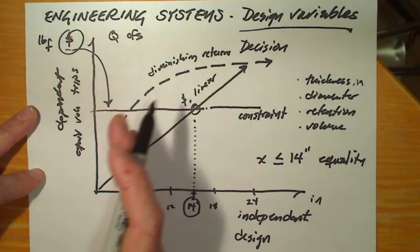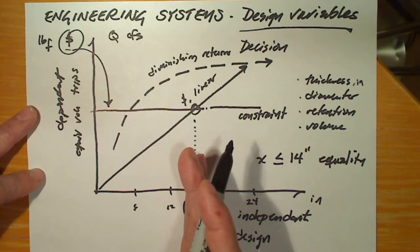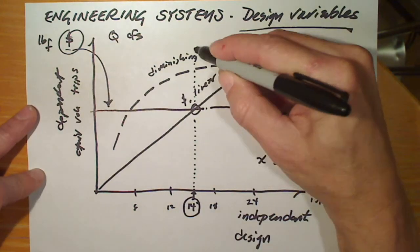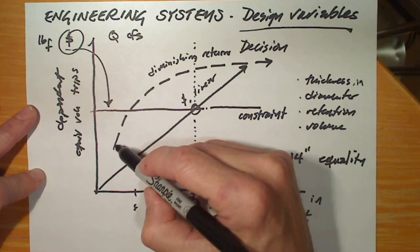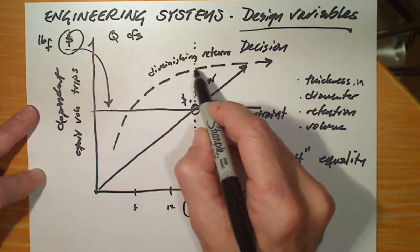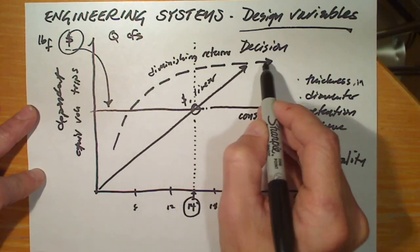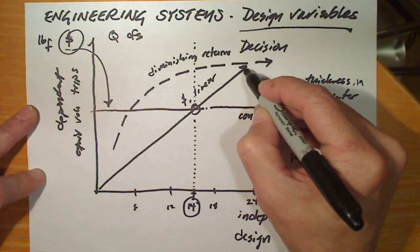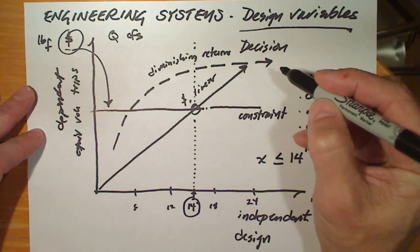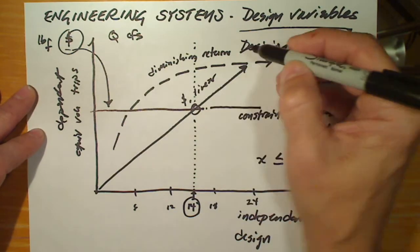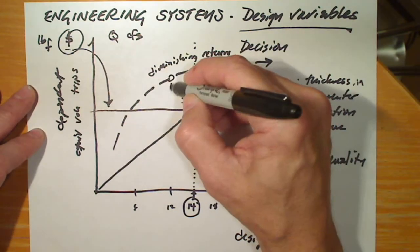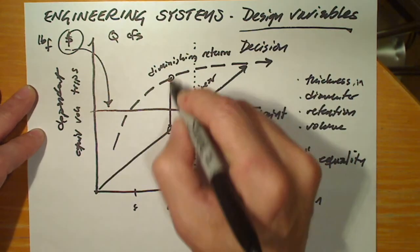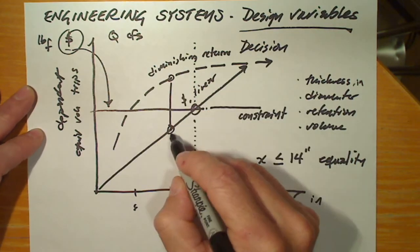Now the question is, which of all the possible pavements that we could design for is the best one? If the benefit of the pavement is represented by the equivalent vehicle trips, and the cost of the pavement is represented by the straight line that we have to pay for it, then it makes sense that our objective could be to maximize the benefits minus the costs.